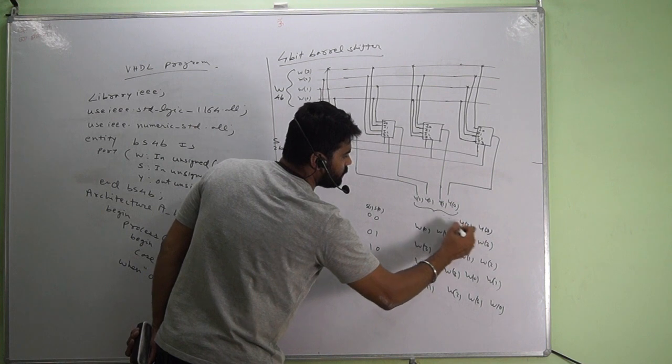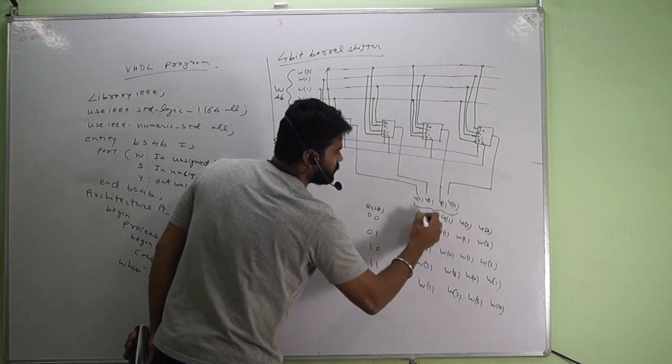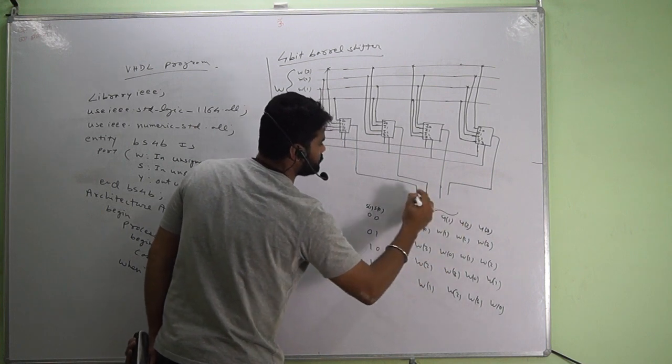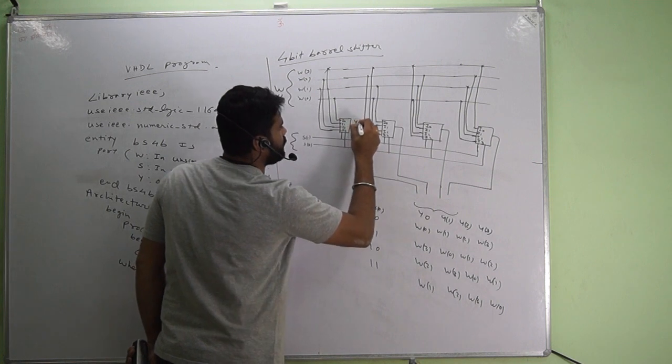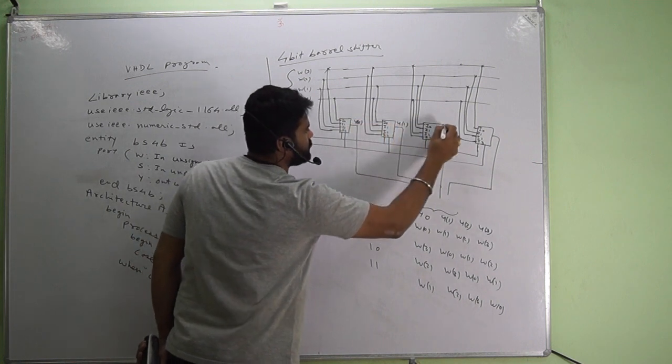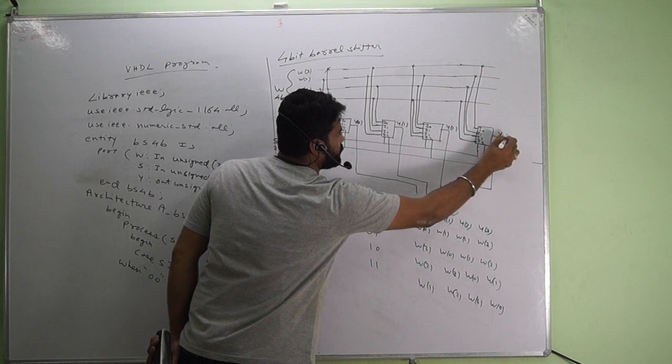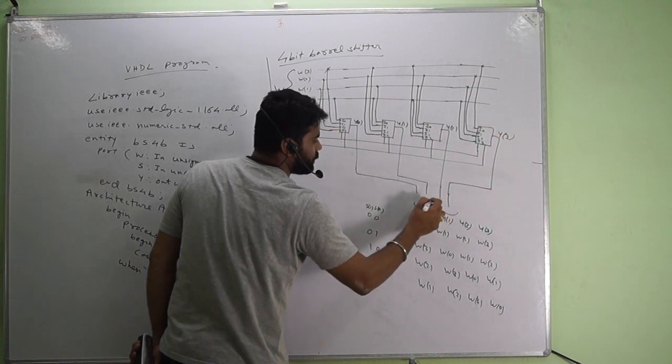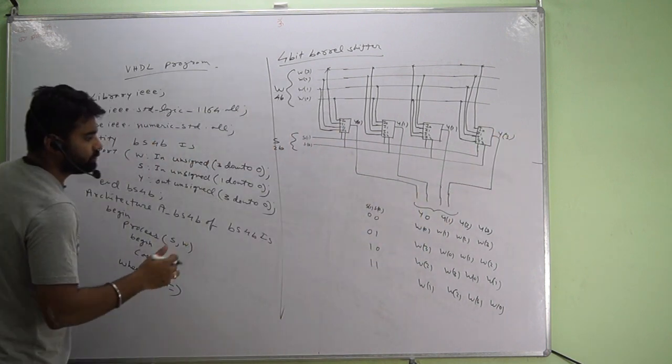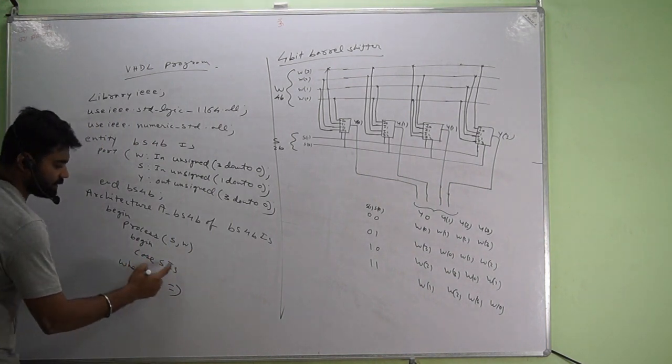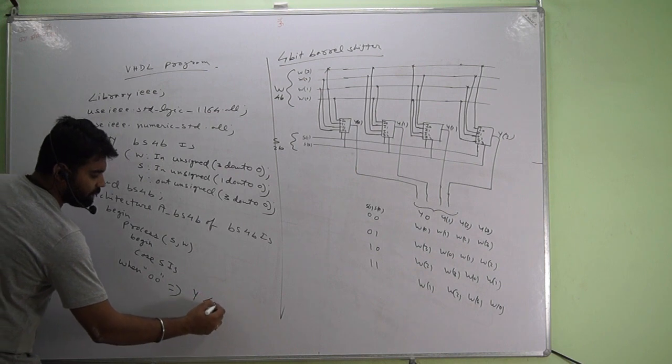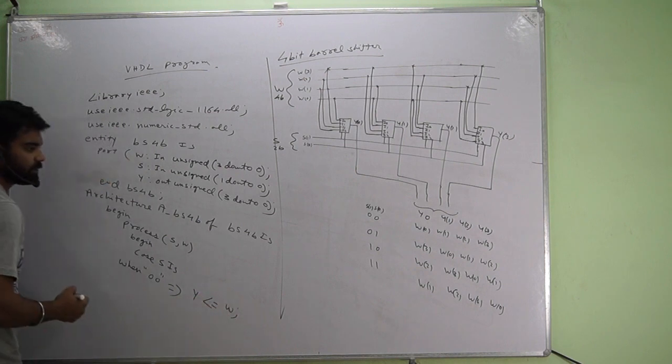Actually this is y0, this is y1, this is y2, and this is y3. Now it is more proper. So obviously when case s is 0 0, then copy w to y directly.